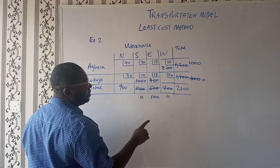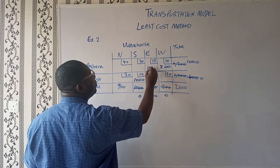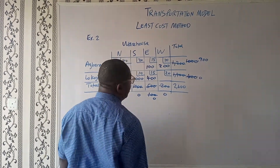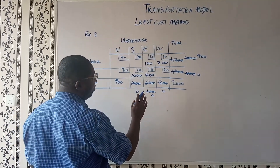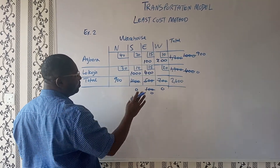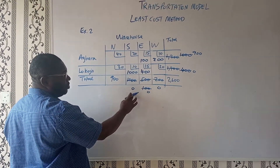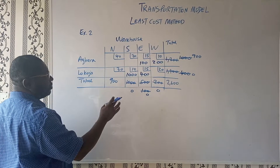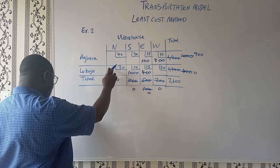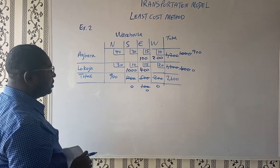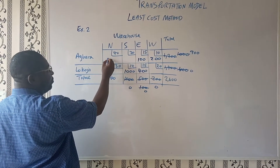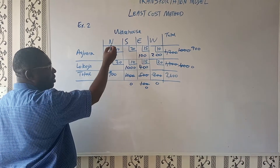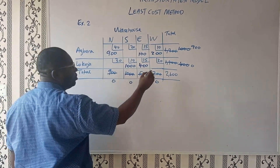We have 100 left. The next least cost is 15, so we come here and fill this 100 to satisfy this point. This one is fully satisfied, and then we're left with 900. The next least cost is 20, but we can't fill 20 because those demands have been fully satisfied. So what we're left with is just this cell — Agbara will fill up the North here with his supply of 900, taking care of the warehouse demand from the North. This becomes zero and this becomes zero.